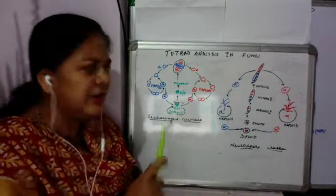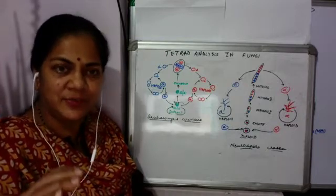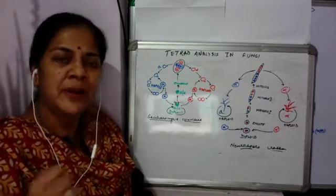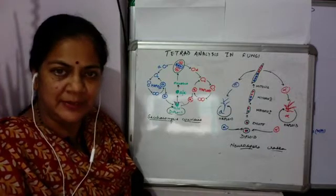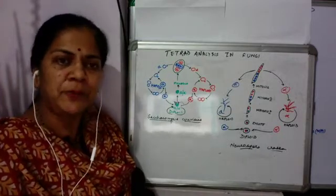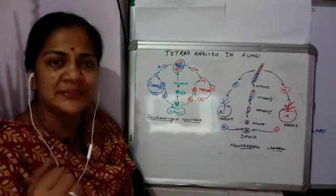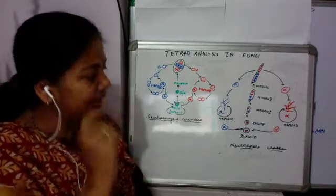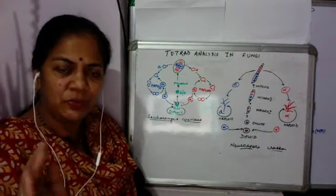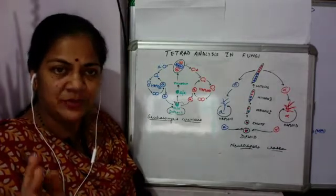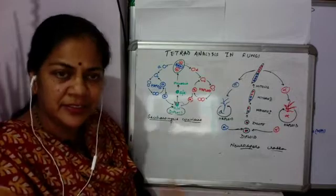Saccharomyces cerevisiae is mostly in a haploid state and undergoes vegetative and asexual reproduction, but under certain conditions two different strains can come together and form a diploid cell. In S. cerevisiae the diploid state remains for some time until environmental pressure causes them to undergo meiosis. Neurospora crassa, on the other hand, remains in a diploid condition only very transiently — most of the life cycle they are asexually reproducing, and they undergo sexual reproduction and immediately undergo meiosis depending on environmental conditions.